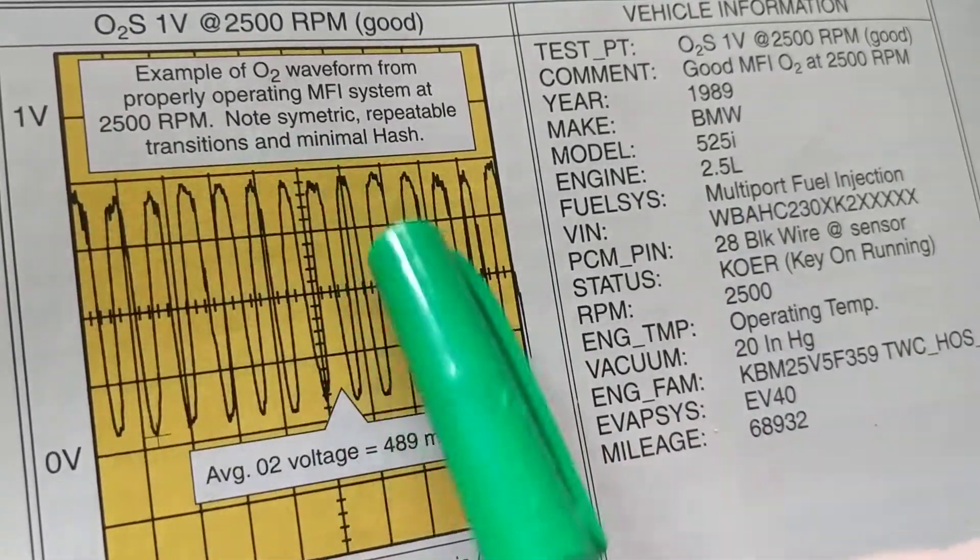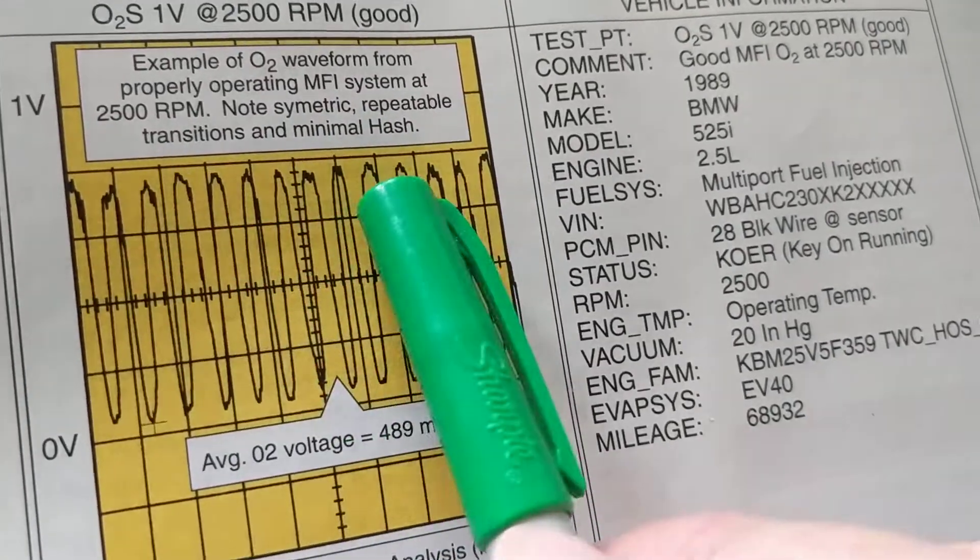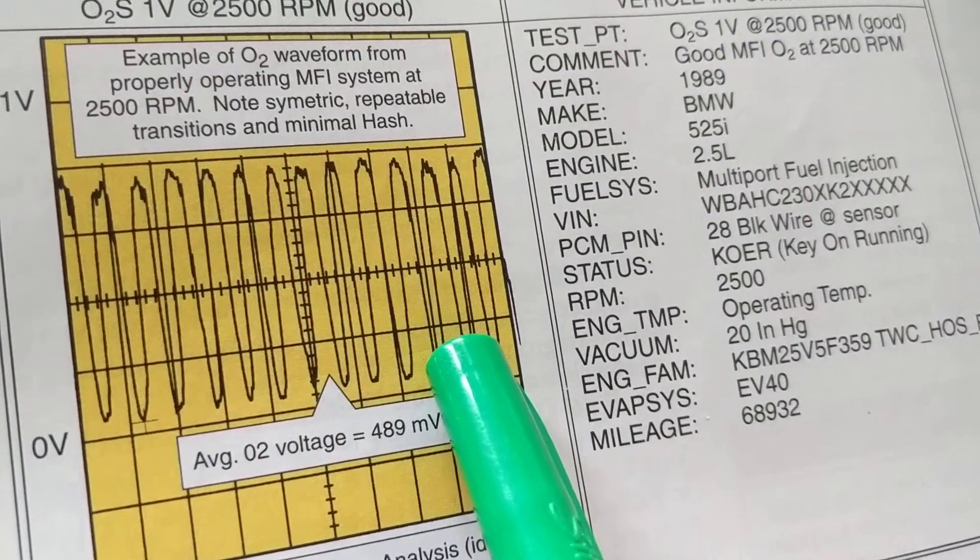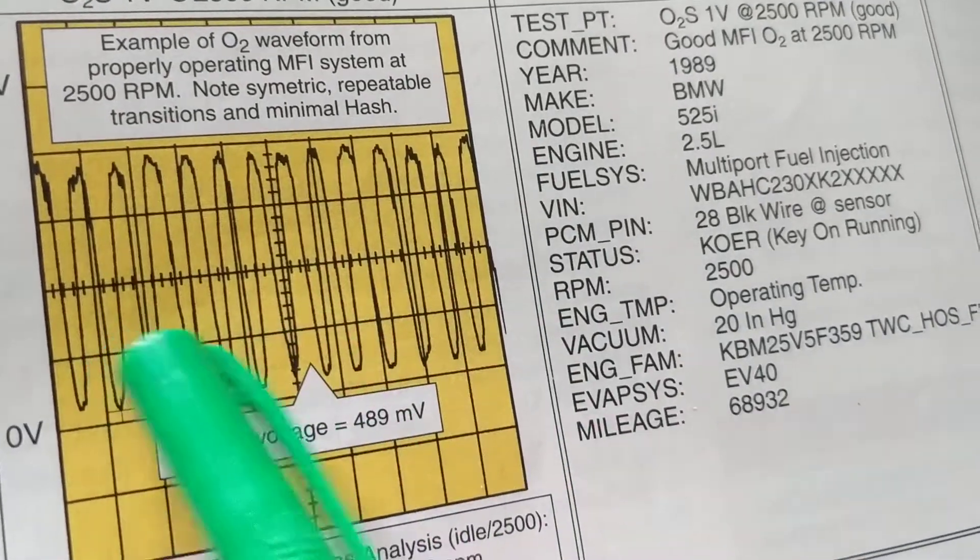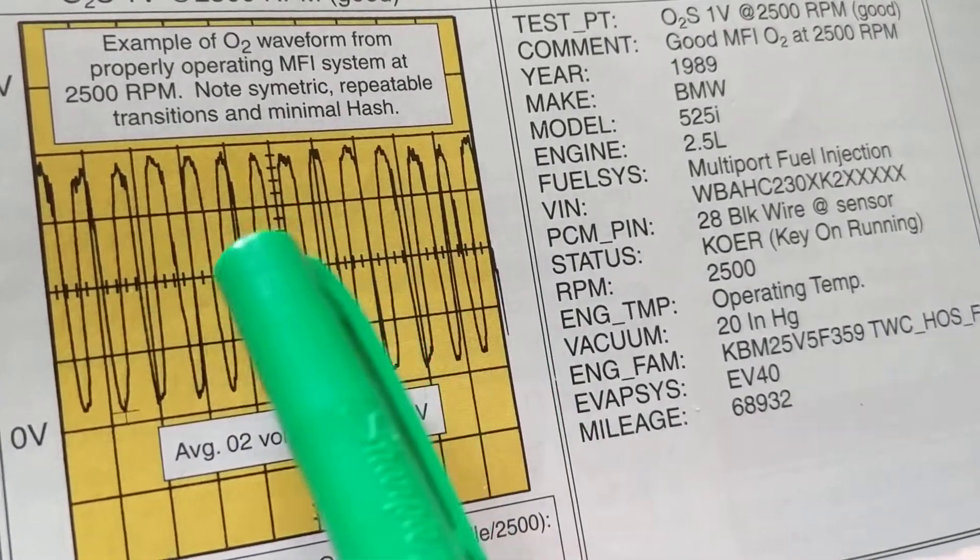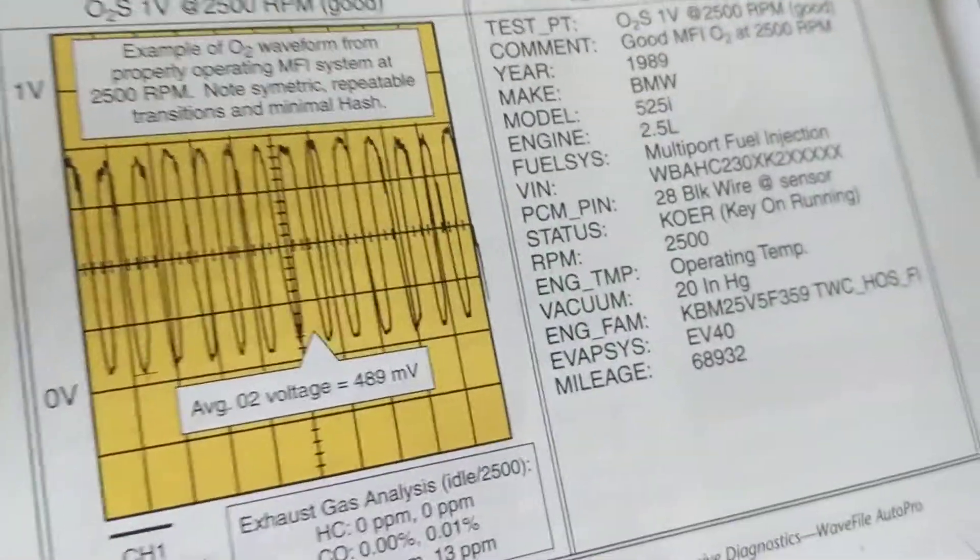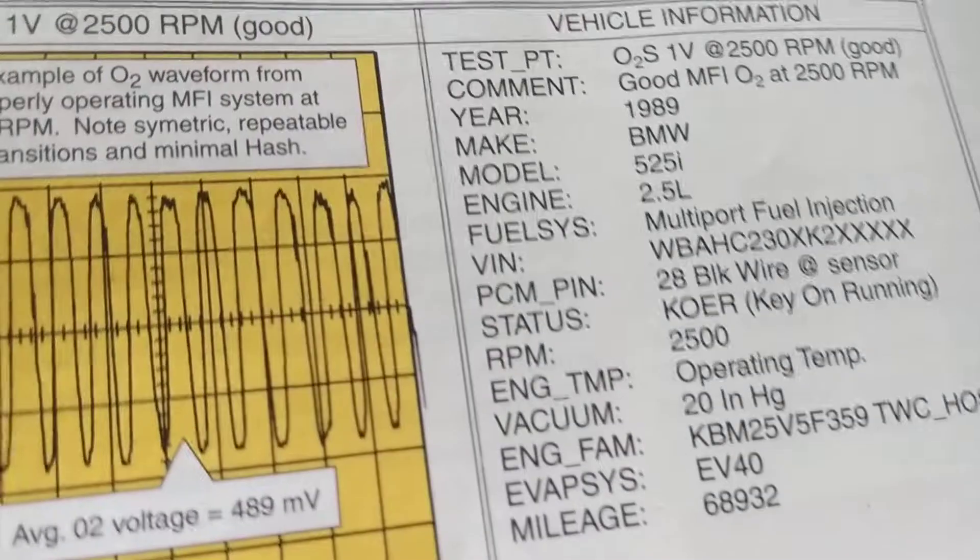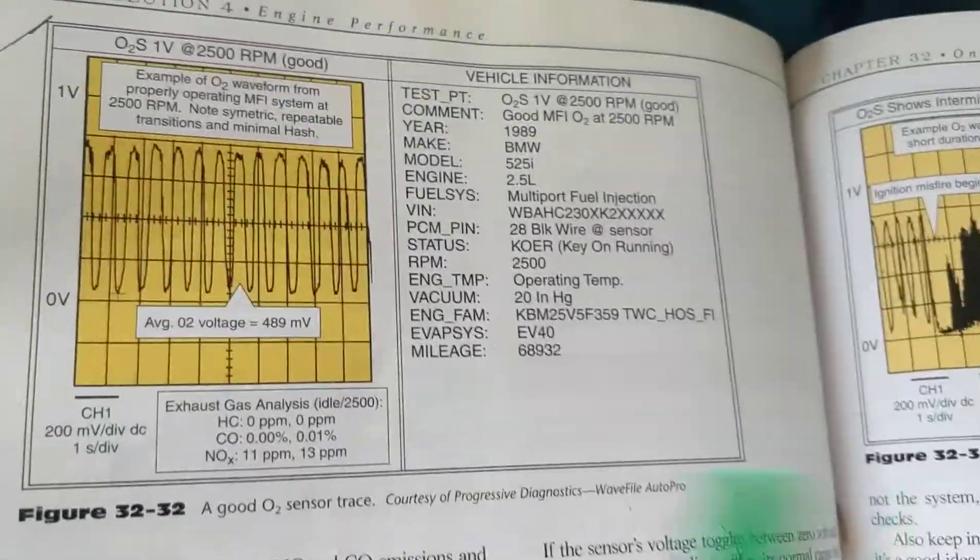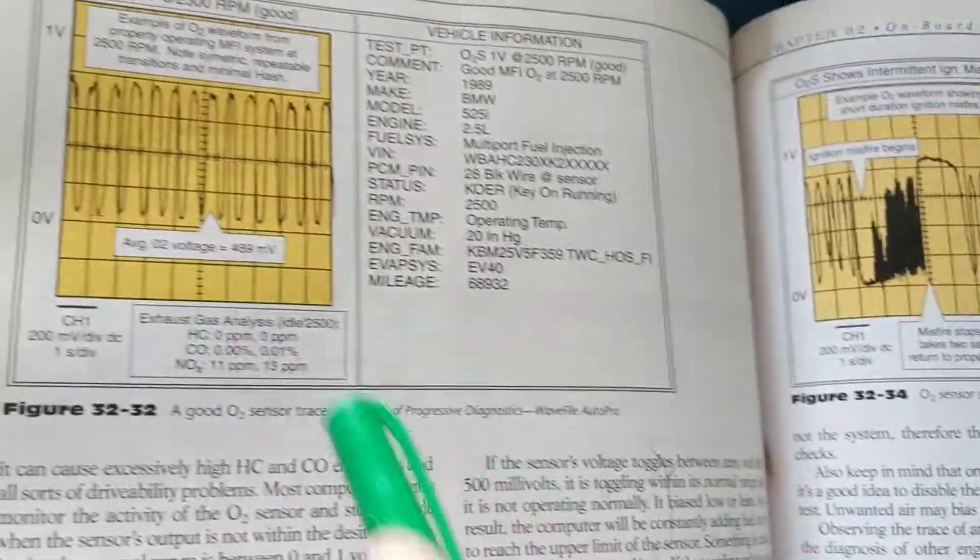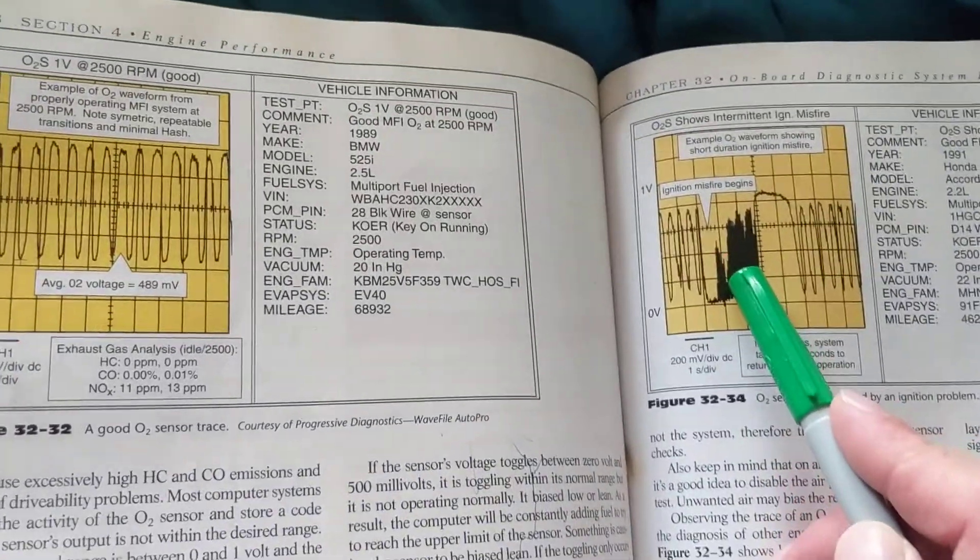This is called rich, this is called the lean zone. Rich means too much fuel, lean means too little fuel, too much air. Everything should be equal below the midpoint and above the midpoint. Why am I bringing this up? A person, the viewer, doesn't understand this. Let's look at a bad oxygen sensor.